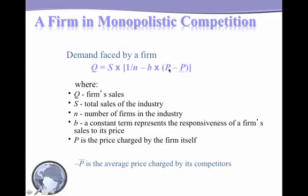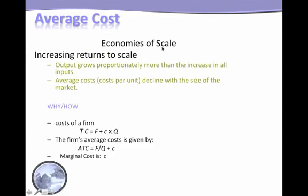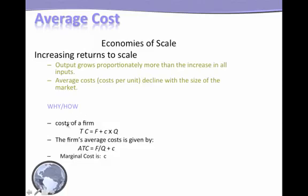Now we look at the cost side — economies of scale means that as you produce more, the average cost decreases; as the scale of production increases, average cost decreases. Consider this linear cost function: total cost equals fixed cost F plus marginal cost c times quantity. Average cost is therefore F/q plus c. With this linear cost function, marginal cost is constant, but as quantity increases the average cost decreases because the fixed cost is spread over a larger amount of output.